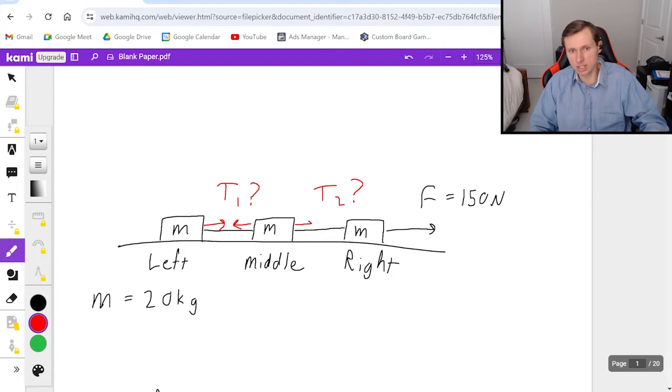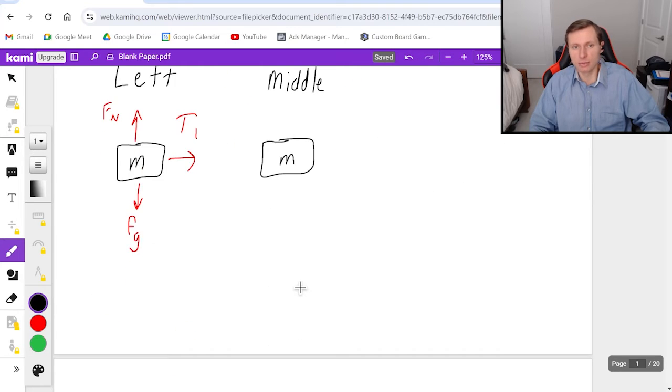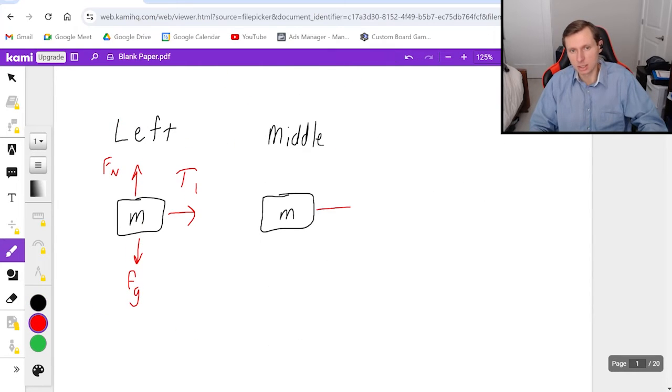Similarly, T2 has the same thing going on, and we'll see that when we look at the right box. But for now, what I'm saying is the free body diagram has T2 pointing to the right and T1 pointing to the left, and that's it. I'm not going to worry about the normal force or the force of gravity.